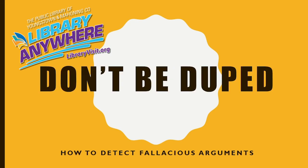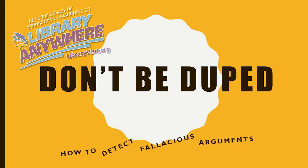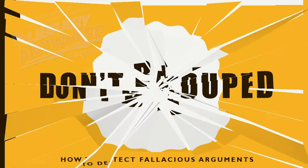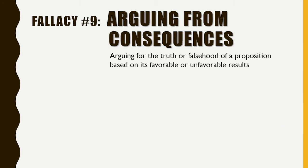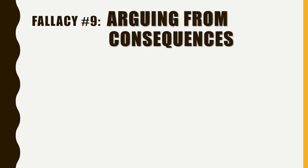Don't be duped! In this video, we will be discussing the Arguing from Consequences Fallacy. This fallacy occurs when someone argues for the truth or falsehood of a proposition based only on its favorable or unfavorable results. The problem is that a proposition's truthfulness does not depend on whether or not you like its consequences.